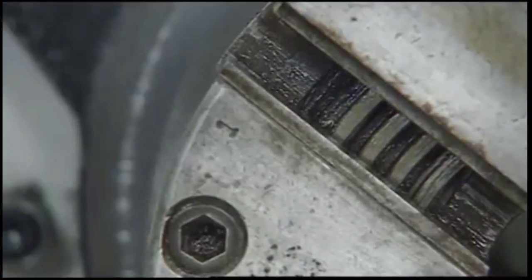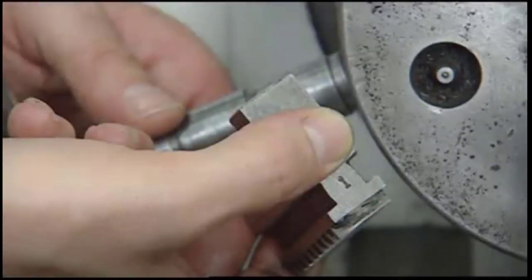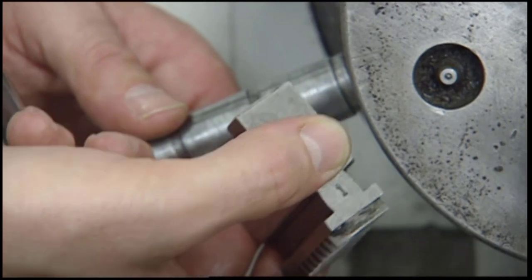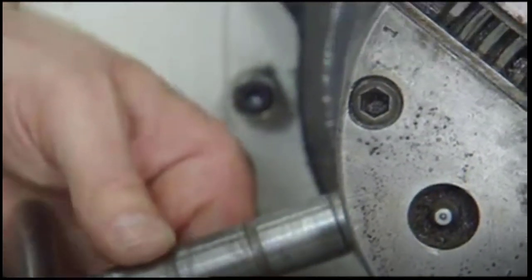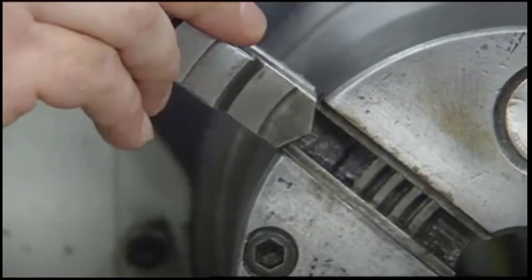The jaws for a universal chuck are numbered one, two, and three, and it's absolutely essential each jaw is inserted in the corresponding numbered slots in the chuck body. To begin, turn the socket on slot number one clockwise until the beginning of the scroll is just visible.